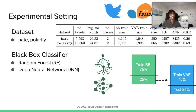We worked on two datasets: height and polarity. Both are tweet datasets, and we trained two black box classifiers on both datasets — a random forest from scikit-learn and a deep neural network from Keras. You can find the details in the paper. The tables show the accuracy of the models and the reconstruction of the variational autoencoder, which is trained on 75% of the remaining part of the test set from the original data.